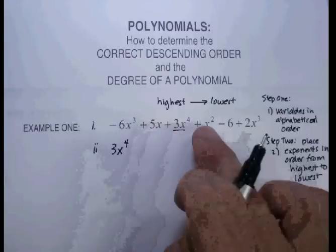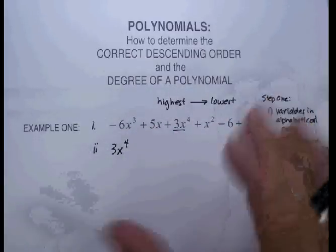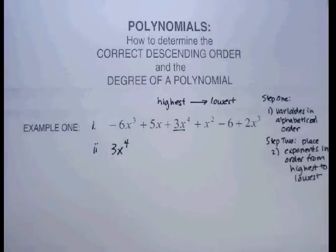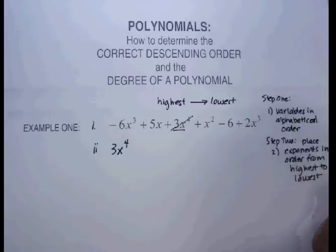Now I'll just look real quickly to see if there's any other x to the fourths, because I might have to add or subtract them, and I don't, or combine like terms. So I can get rid of this one now. Now let's go to the next one, which is x cubed, right?